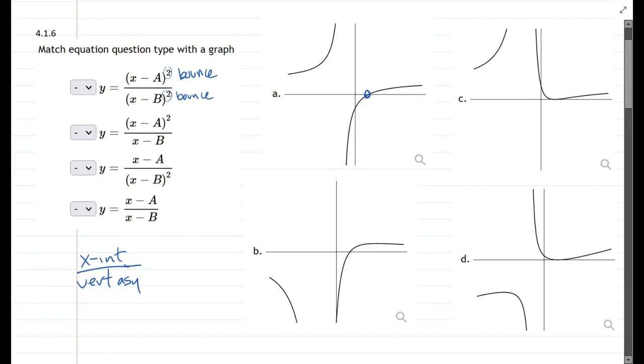The third graph the x-intercept bounces, that's good. Remember the x-intercept is in the numerator.